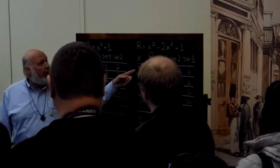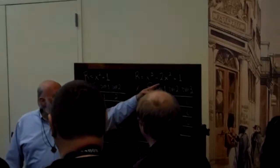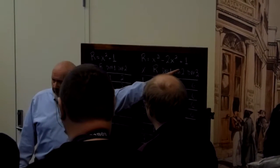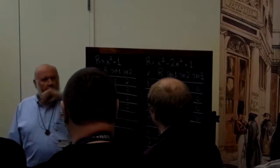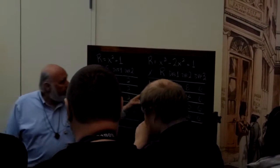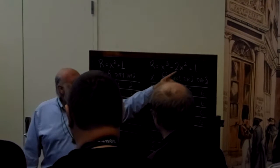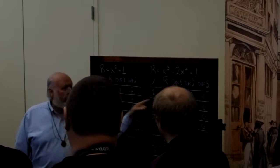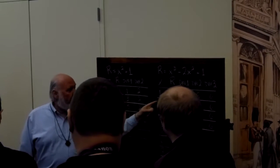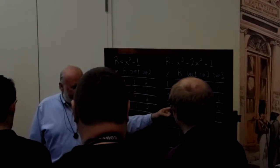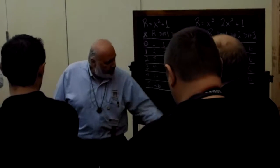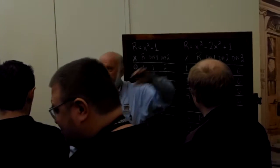Here's what happens. Put x = 1 in: 1 cubed is 1, 1 squared times 2 is 2, so 1 - 2 + 1 = 0. The first result is 0. Put x = 2: 2 cubed is 8, 2 squared times 2 is 8, that cancels, plus 1 gives 1. For x = 3: 3 cubed is 27, 3 squared times 2 is 18, 27 - 18 = 9, plus 1 gives 10. Then 33, 76, 145... this result matches that equation.